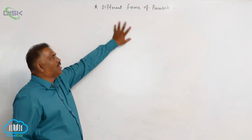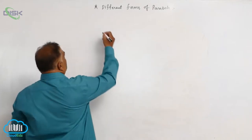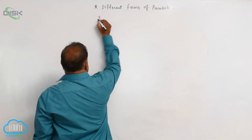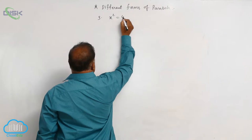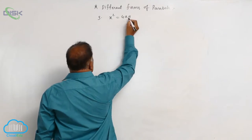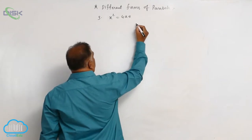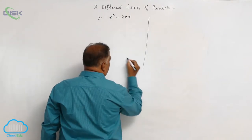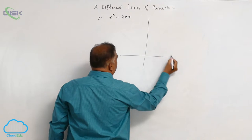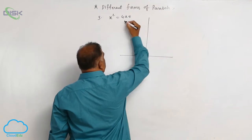We will discuss the third parabola, x squared is equal to 4ay. This is a completely upward parabola.